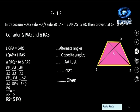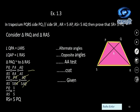In trapezium PQRS, PQ is parallel to SR, AR = 5 × AP, and AS = 5 × AQ. Prove SR = 5 × PQ. Consider triangles PAQ and RAS. Angle QPA and angle ARS are alternate angles (congruent). Angle QAP and angle RAS are vertically opposite angles (congruent). So the triangles are similar by AA test. PQ upon RS equals PA upon RA equals AQ upon AS equals PA upon 5PA = 1 upon 5. Therefore RS = 5PQ.